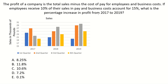The question is asking us about the percentage increase from 2017 to 2019. So on our graph we are just interested in looking at 2017 and 2019. If we look at the axes, it says that the sales are in thousands of pounds — that is what each of these bars represents. The question is asking us about the profit of a company, not the sales, so we need to convert these sales into profit.